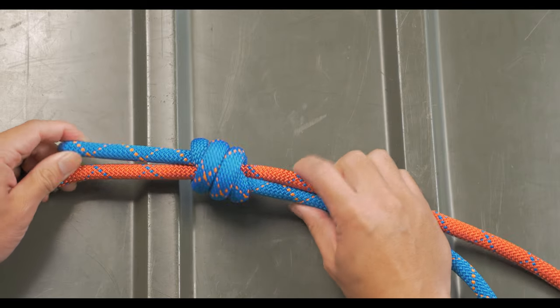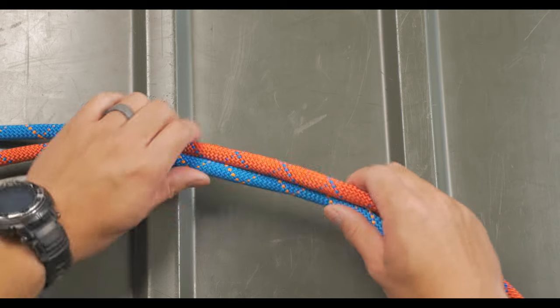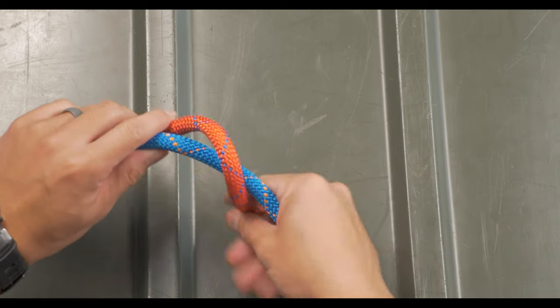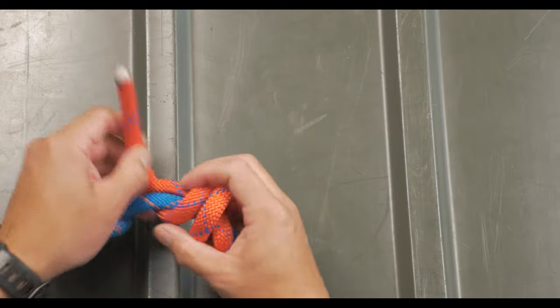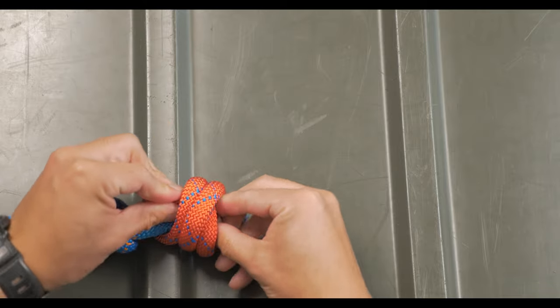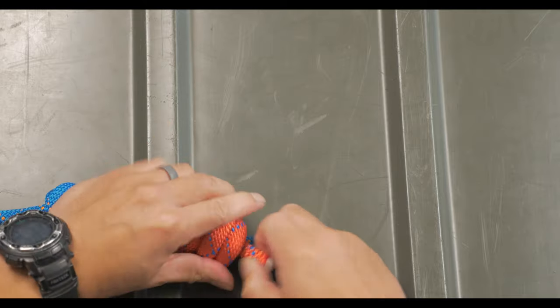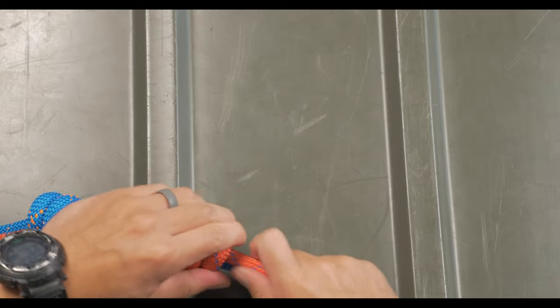The same thing is done on the other side, going the opposite direction. When you pull it tight and finish it off, the two coils are going to fit nicely into each other.